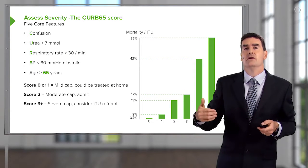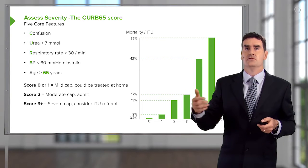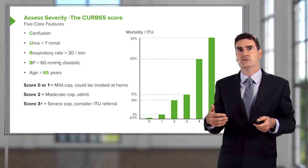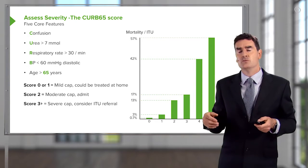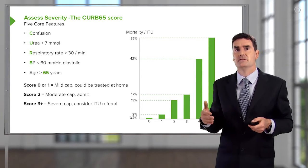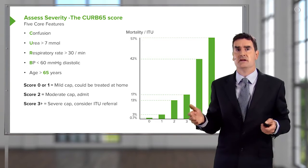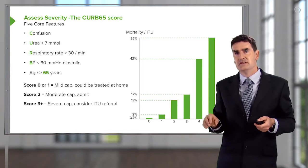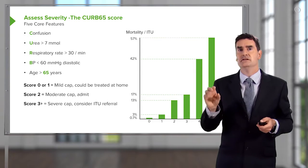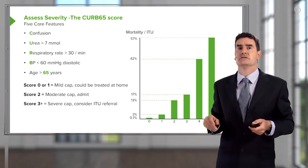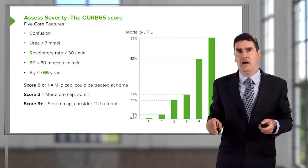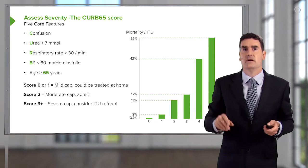As you go up the score, the mortality associated with it becomes higher. At the higher scores of 4 and 5, the mortality is around 50%. Those are the patients with severe disease that you really need to consider referring to intensive care for close and aggressive management.